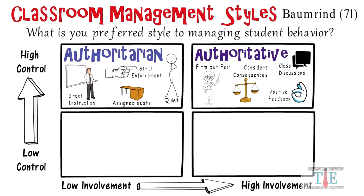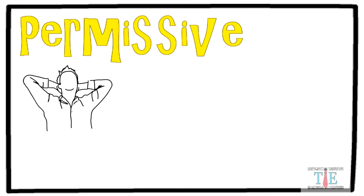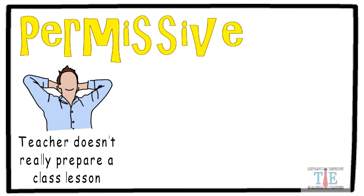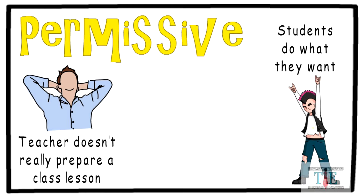Next up, the permissive style. Very little control and very little student involvement. Unfortunately, this is a teacher that doesn't really care about their teaching career — teaching is just a way to pay the bills. The permissive teacher often doesn't take the time to prepare lesson plans. Permissive style classrooms are out of control; students are out of their seats doing whatever they please. A teacher doesn't take the time to go over classroom rules or procedures.